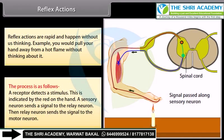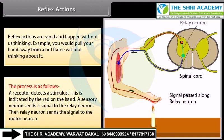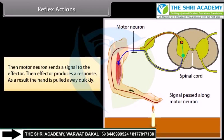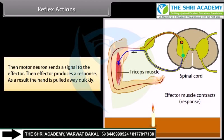The process of a reflex action is as follows: a receptor detects a stimulus (indicated by redness on the hand); a sensory neuron sends a signal to the relay neuron; the relay neuron sends the signal to the motor neuron; the motor neuron sends a signal to the effector; and then the effector produces a response — as a result, the hand is pulled away quickly.